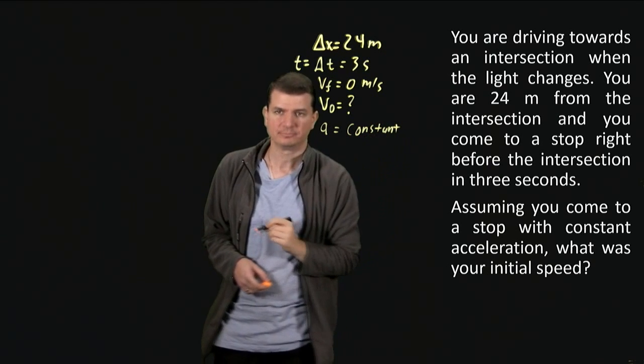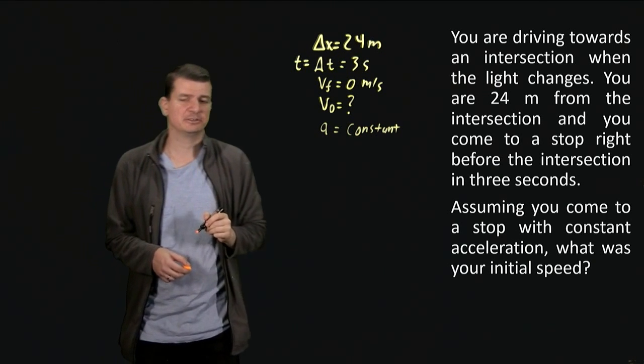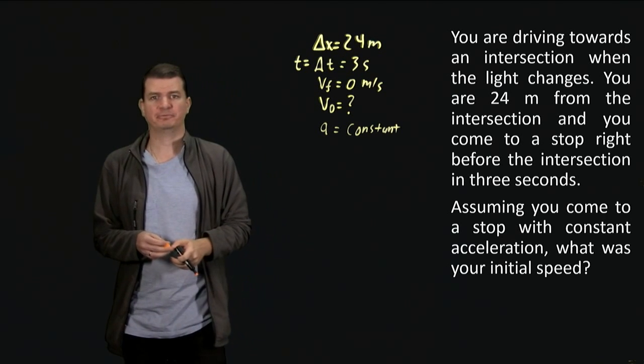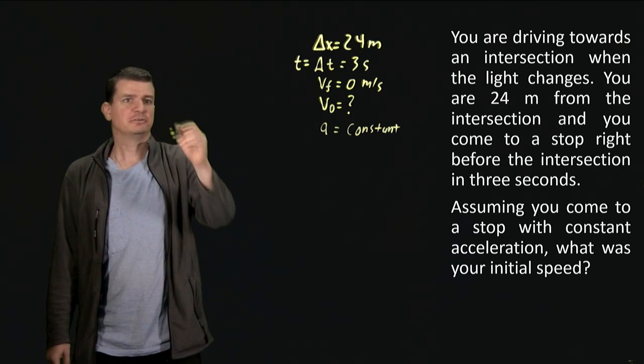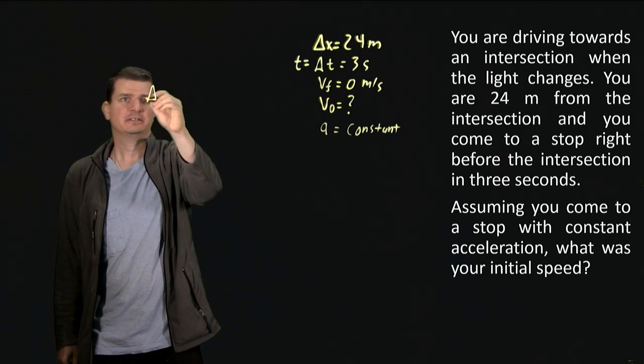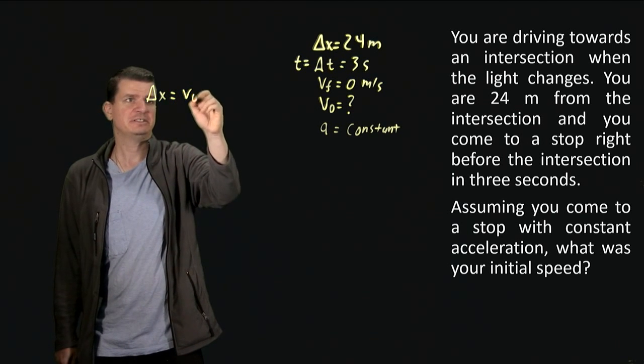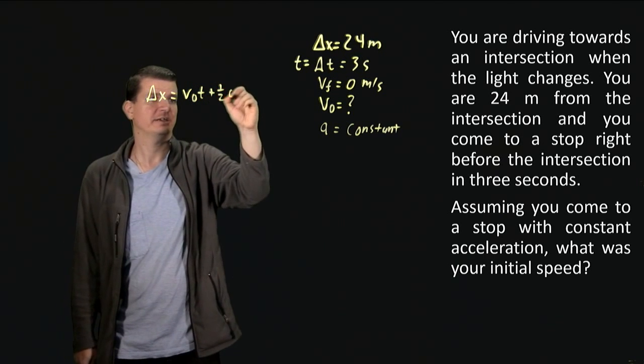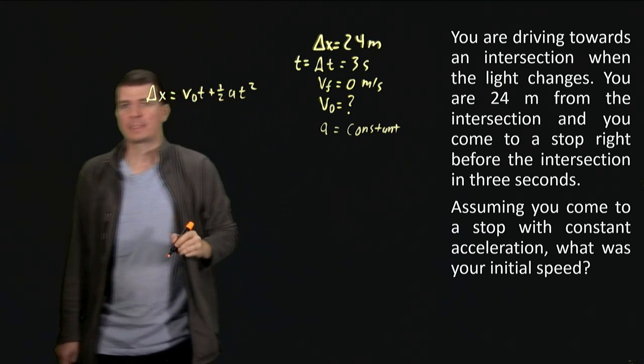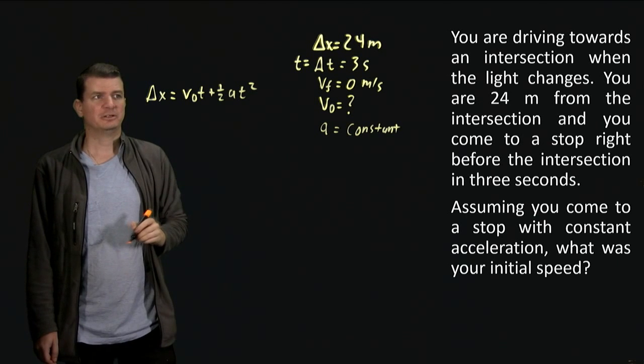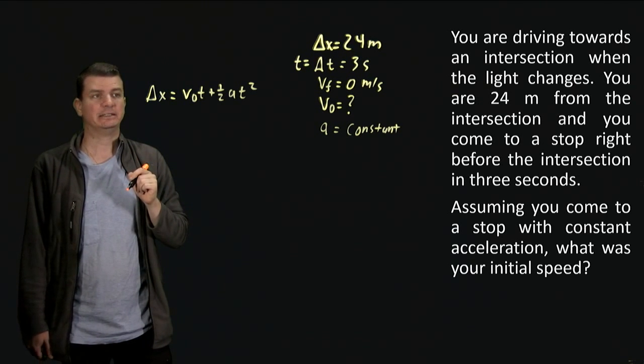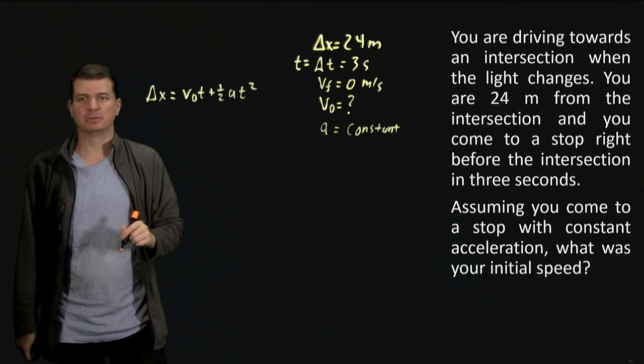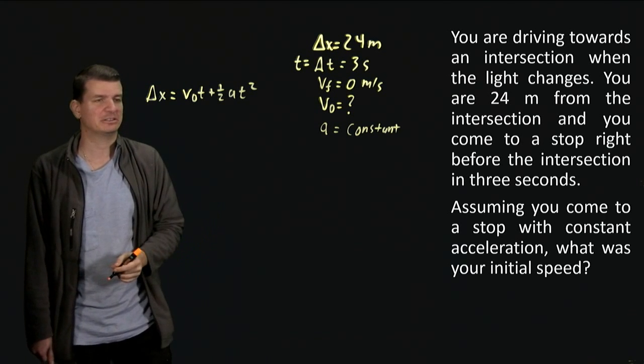So the fact that it's constant means we can grab all of our favorite equations from kinematics. We can do things like delta x is supposed to be v zero t plus one half a t squared, but we don't know a and we don't know v zero. We do know t, so that's progress, but we've got two unknowns in that equation so it's not going to help us solve for v zero.